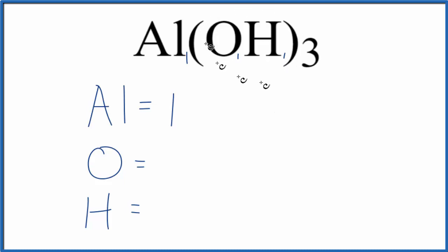But they're in the parentheses here. So everything in the parentheses is multiplied by the subscript here on the outside. So we have three times one, that gives us three oxygen atoms. Three times the one, that gives us three hydrogen atoms.